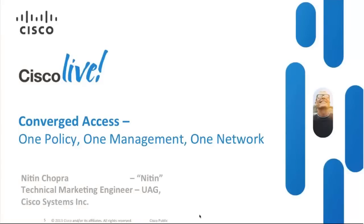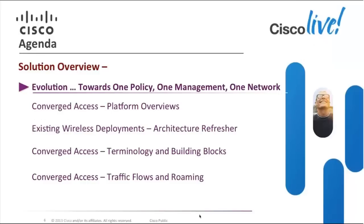To some good morning, to some good afternoon and to some good evening. My name is Nitin Chopra and I'm part of the Unified Access Group, focusing on Catalyst 4500 and Catalyst 3850. As Ray pointed out, the 3850 was launched in January this year at Cisco Live. Today we are going to discuss entirely the Catalyst 3850 — covering the new Cisco jargon of one policy, one management and one network, then the 3850 architecture, and then the Cisco converged unified wireless network deployment.